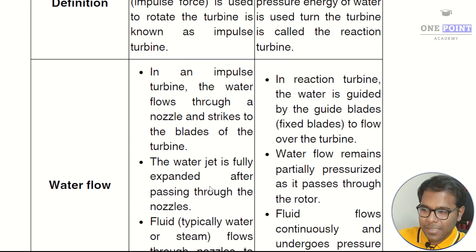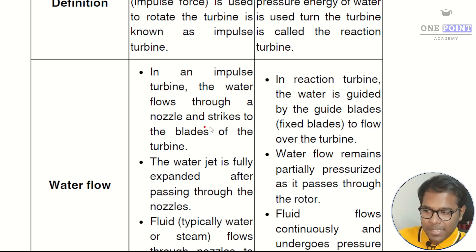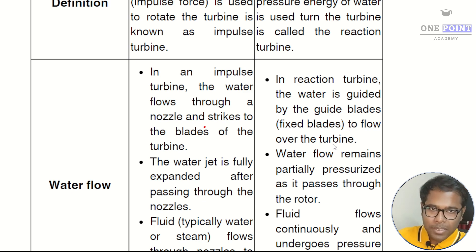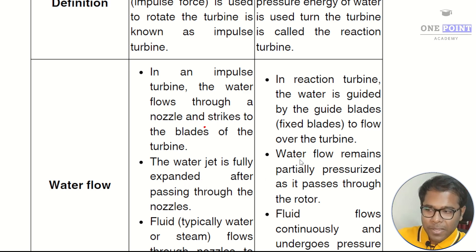The second difference is based on water flow. In an impulse turbine, the water flows through a nozzle and strikes the blade of the turbine, whereas in a reaction turbine the water is guided by fixed guide blades to flow over the turbine. In an impulse turbine the water jet is fully expanded after passing through the nozzles, whereas in a reaction turbine water flow remains partially pressurized as it passes through the rotor.